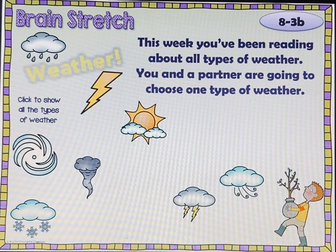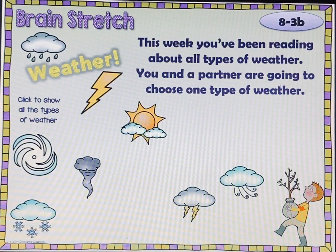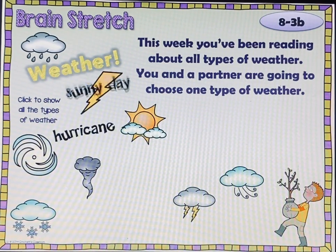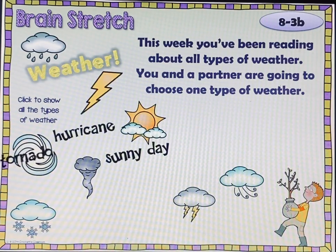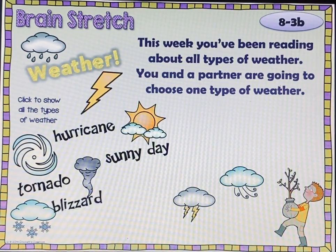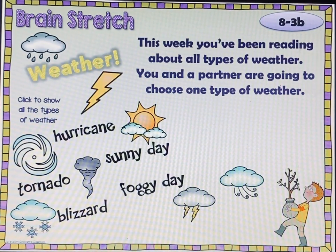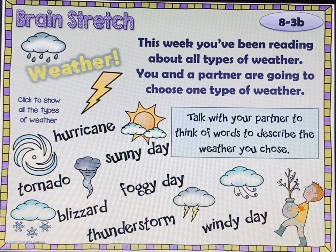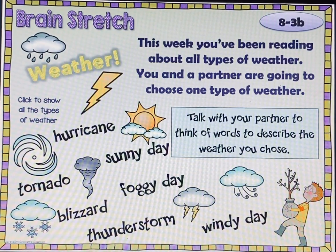Our brain stretch. We've been reading about all types of weather, so you're going to choose one type of weather. You could choose hurricane, sunny day, tornado, blizzard, foggy day, thunderstorm, or windy day. Think of words to describe the weather that you chose. Go ahead and pick one of those and then think of some words to describe it. Push pause and then push play when you're ready to go to the next one.